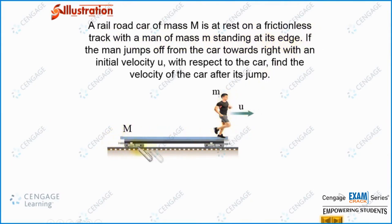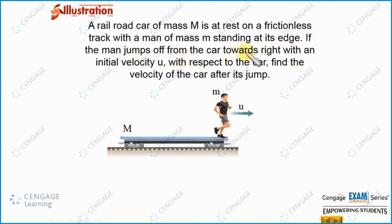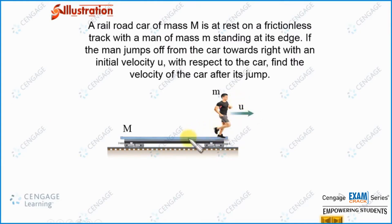In this diagram, you can observe the mass of this railroad car which can move on the track without friction. This man is standing at the right side edge and has mass small m. If the man jumps from the car toward the right with an initial velocity u with respect to the car, we need to find the velocity of the car after the jump.